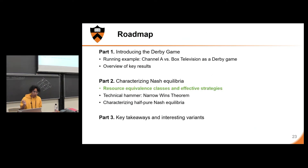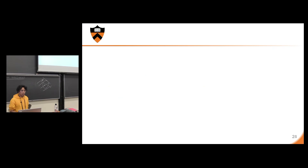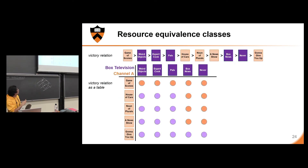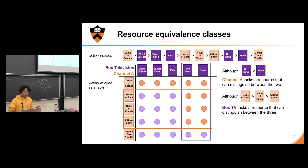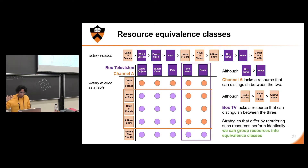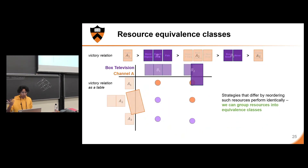On this slide I have the same victory relation we've been seeing, also shown as a table. Even though Box News is a better show than Never, Channel A lacks a resource that can distinguish between the two. Similarly, with the three middle resources of Channel A, Box TV lacks a resource that can distinguish between these. Strategies that reorder these indistinguishable resources still perform identically, so we group resources into equivalence classes.